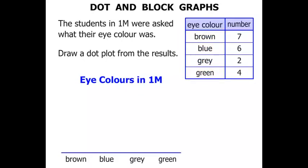Let's first look at brown. There were seven students who had brown eyes. So we go 1, 2, 3, 4, 5, 6, 7. Seven dots represent seven students.